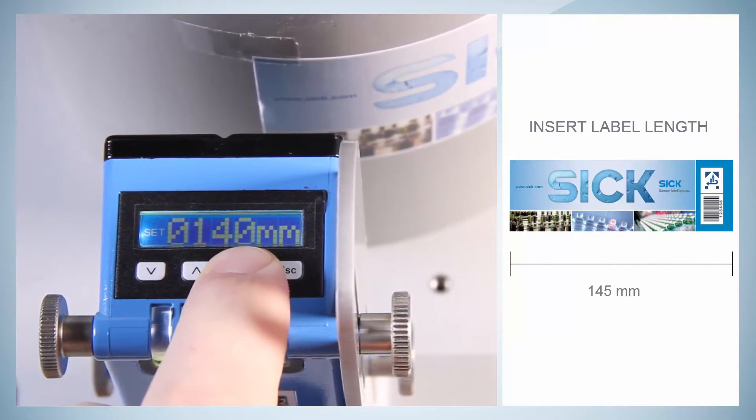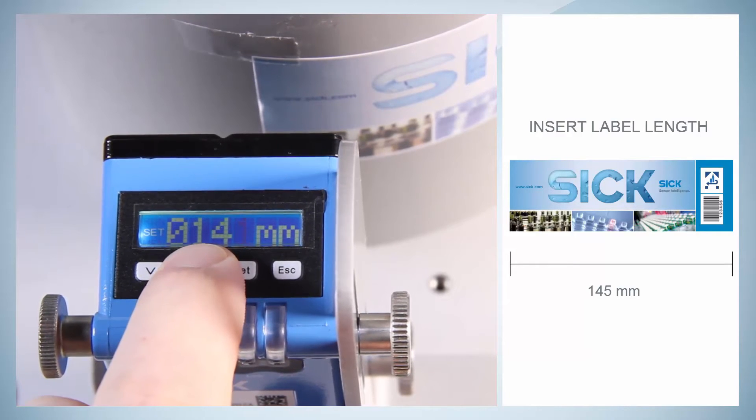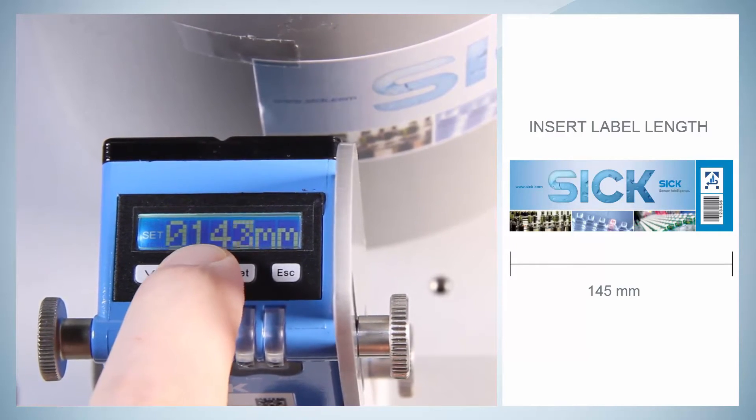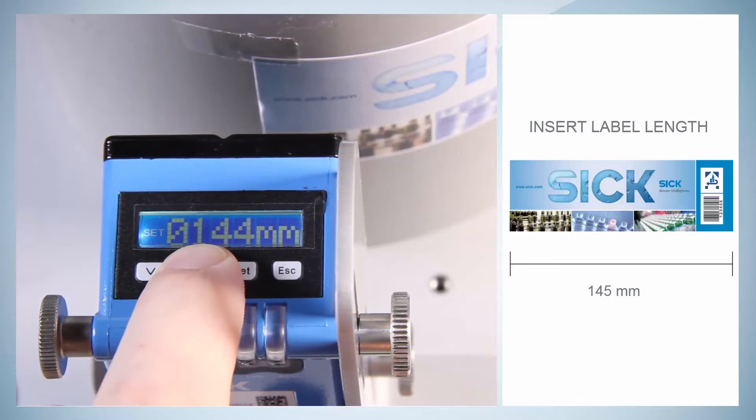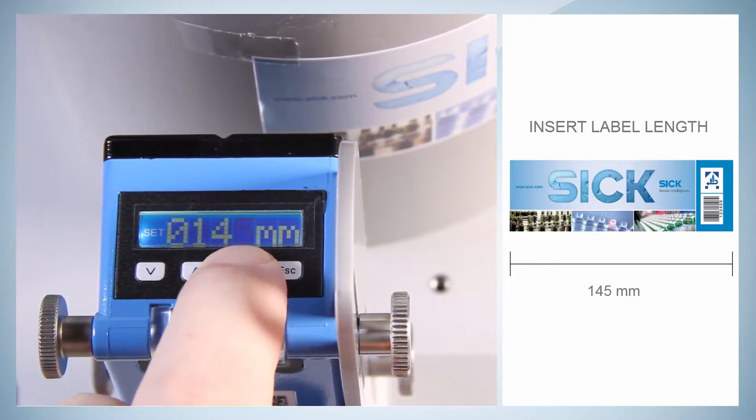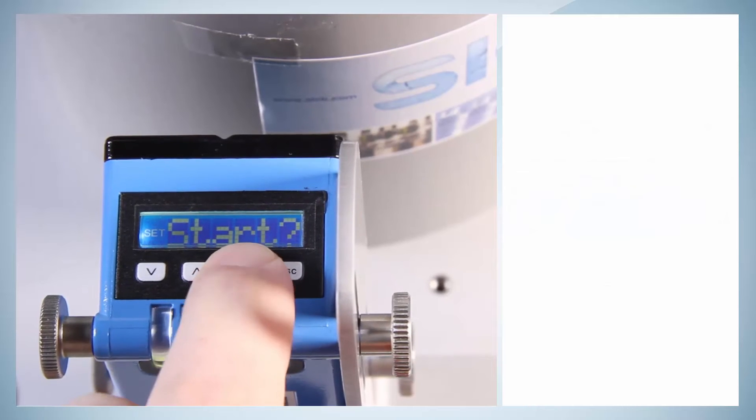Here, it is important that the set value for the label length is not longer than the real length of the label. Each single number can be set and changed. The setting needs to be confirmed by Set and the drum turned. The label now passes the sensor.